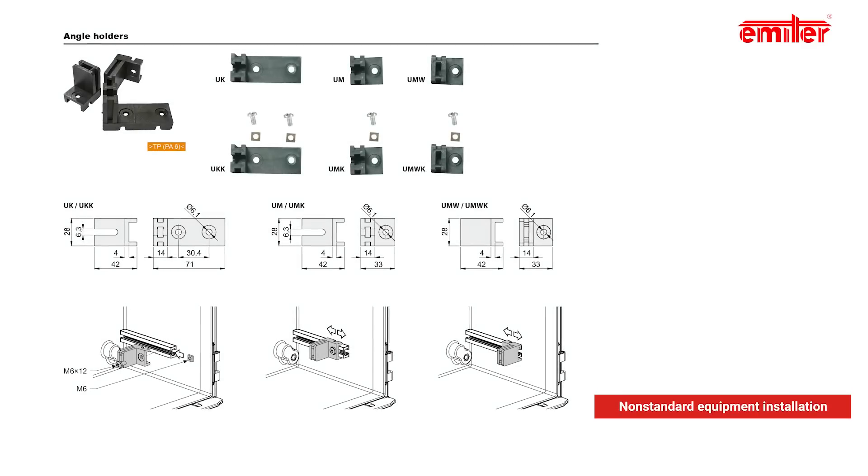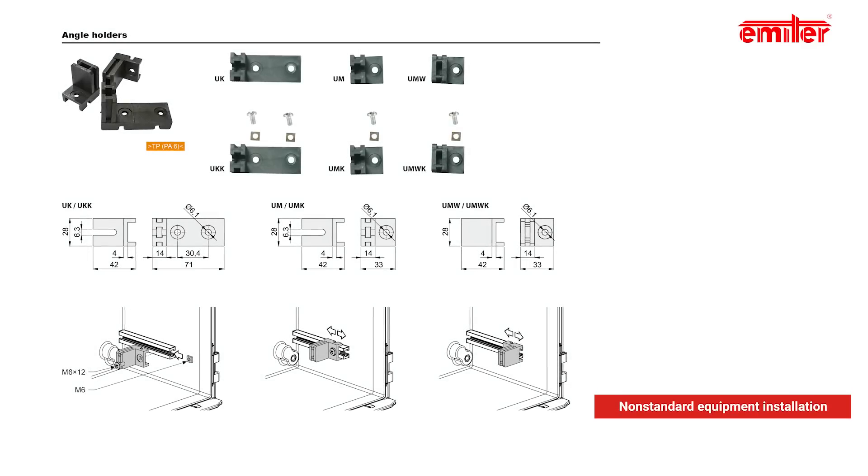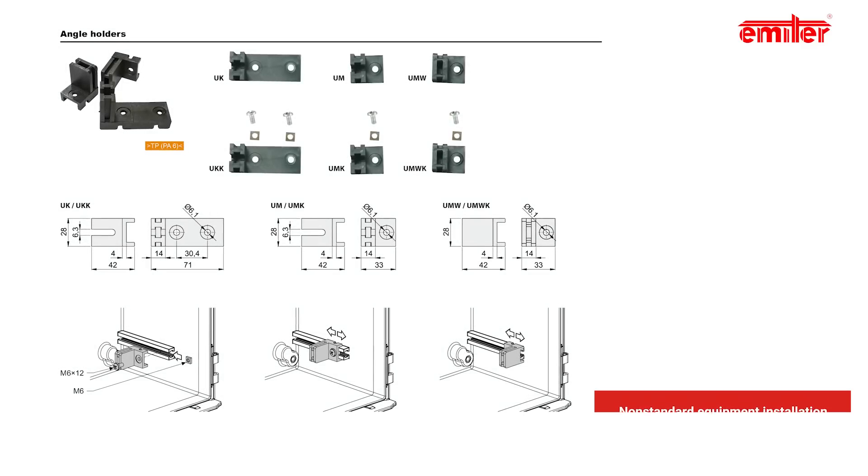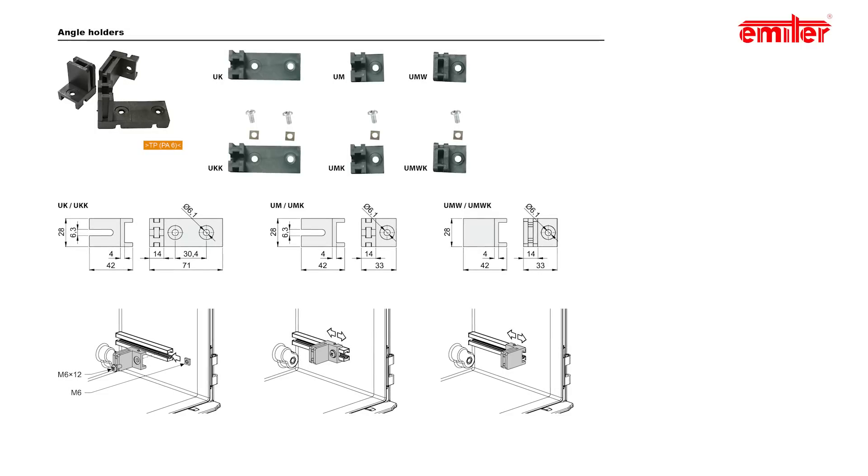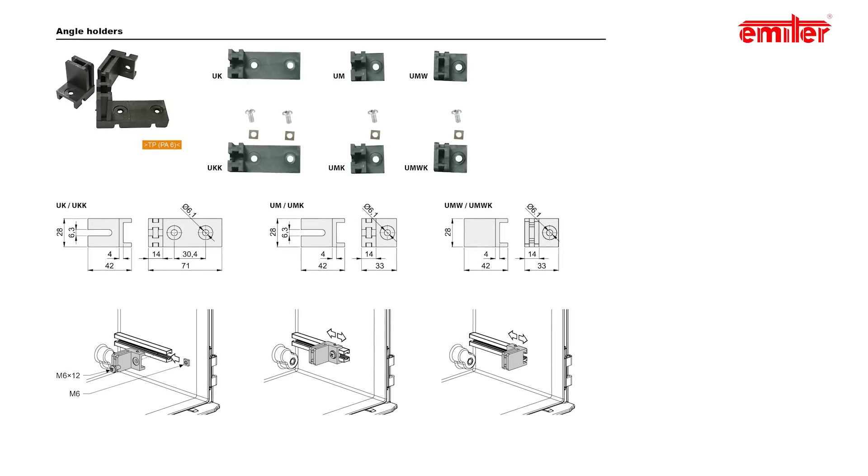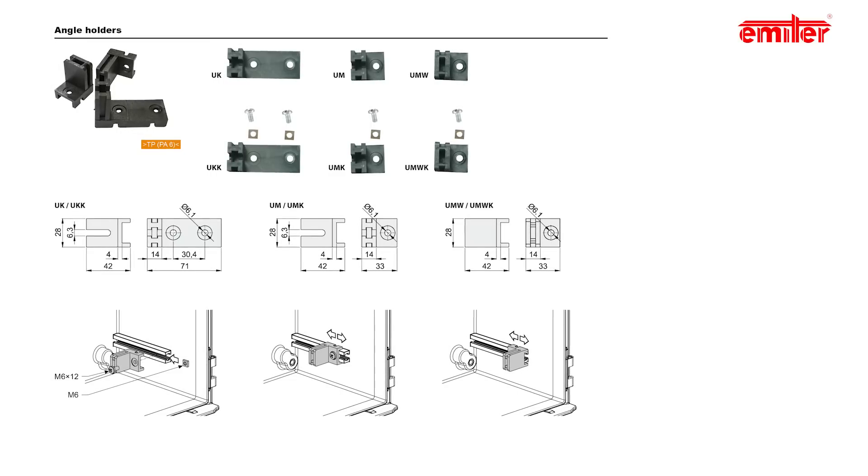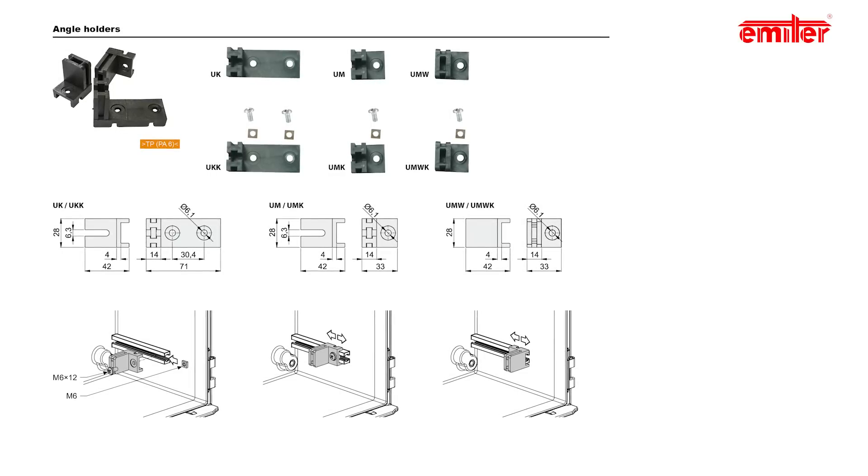For non-standard equipment, we have three types of angle holders. Each of them can be attached to the rails on the sides of the enclosure, and then we install accessories to it. In the catalog, you will find them described as UKK, UMK, and UMWK.